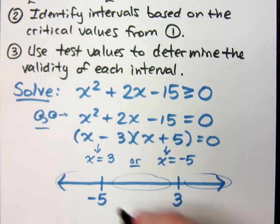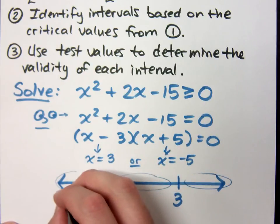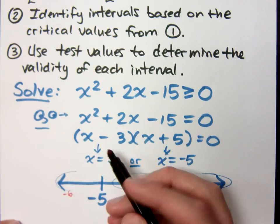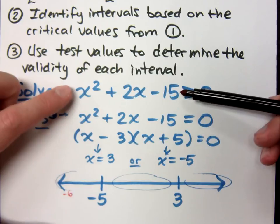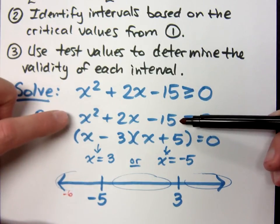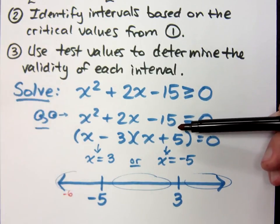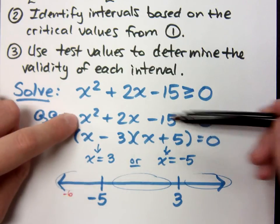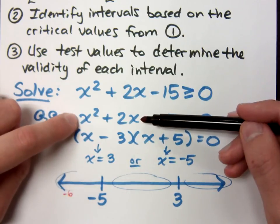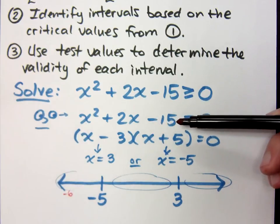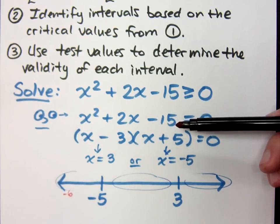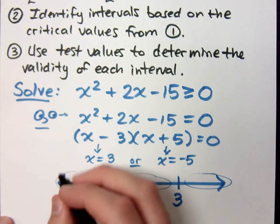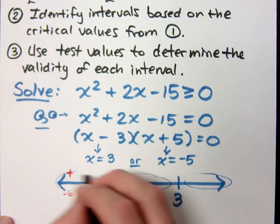So here's what we're going to do. If I test something, say negative 6, and I would plug in negative 6 into this expression. Let's plug it in right here. Is it positive or negative? That's really what I want to see. If I plug in negative 6, I get 36 minus 12 is 24, and then 24 minus 15 is 9. So that's a positive number. So I'm just going to make a note here. I've got positives over here.